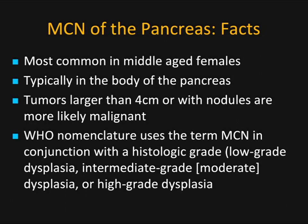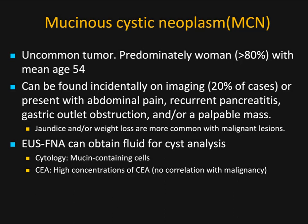Several facts. MCNs are most common in middle-aged females. They're typically located in the body of the pancreas, sometimes closer to the tail, but rarely near the head. They're usually larger than 4 cm or with nodules when malignant. MCNs are essentially considered pre-malignant and will be removed surgically. The WHO nomenclature uses the term MCN in conjunction with the histologic grade: low-grade, intermediate-grade dysplasia, or high-grade dysplasia. It's a relatively uncommon tumor, but we are seeing more of them. Often they're incidentally seen on imaging about 20% of the time, though other cases present with abdominal pain, recurrent pancreatitis, gastric outlet obstruction, or even a palpable mass.